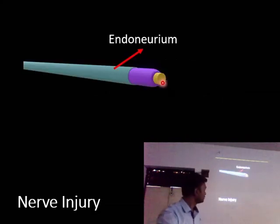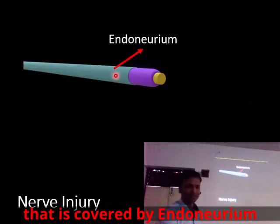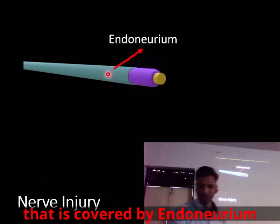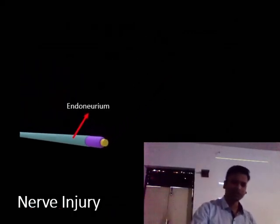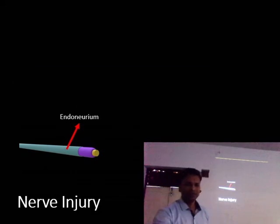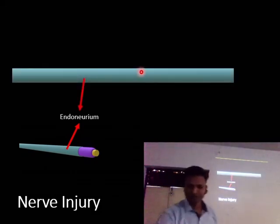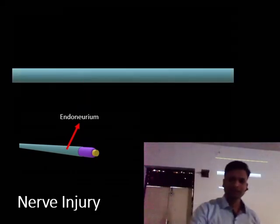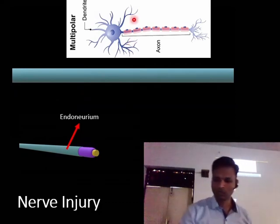We have this neuron, and we have the myelin sheath that is covered by the endoneurium. So again we see this endoneurium and the neuron.